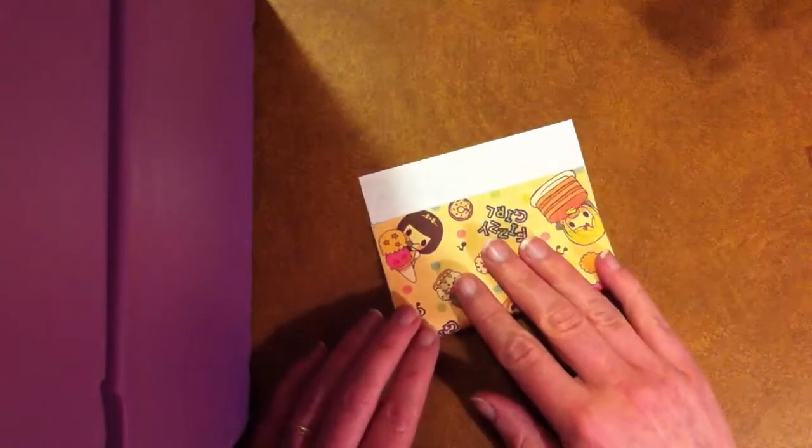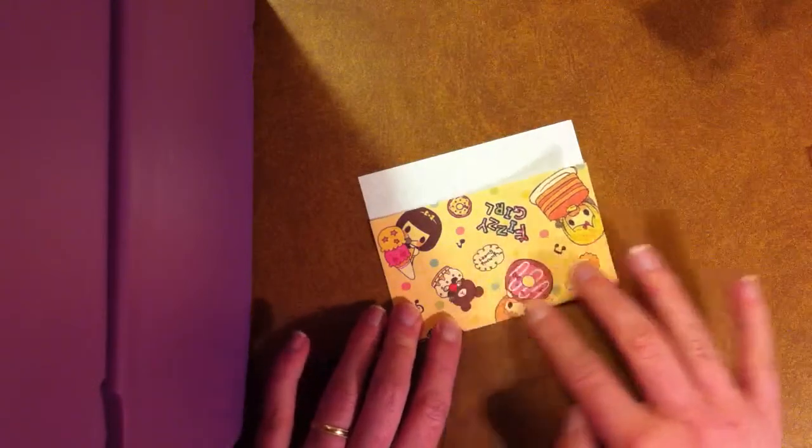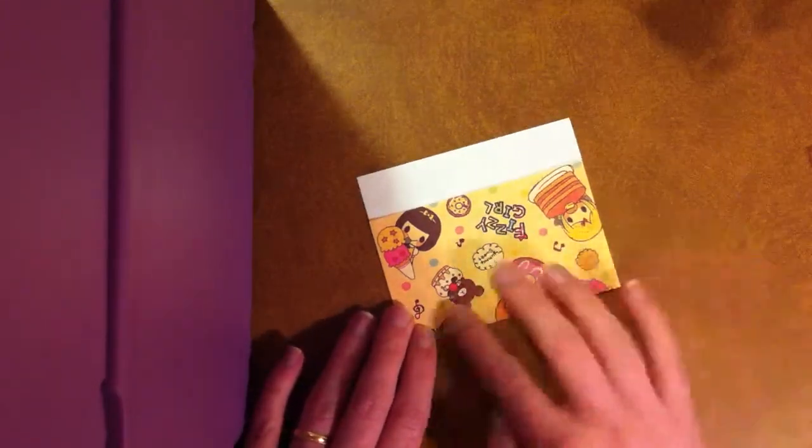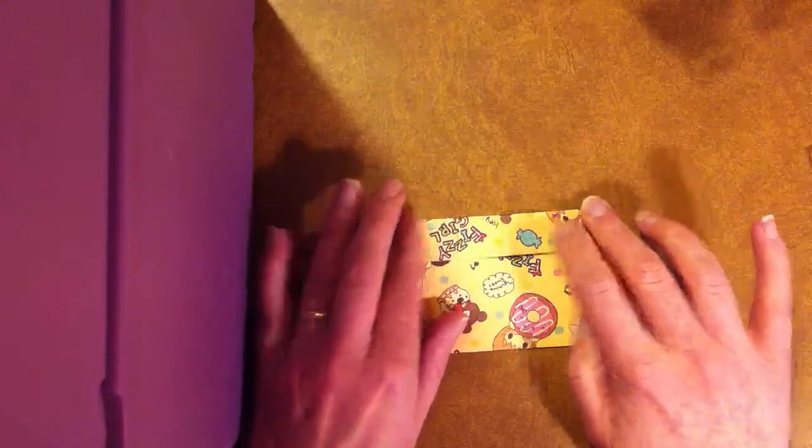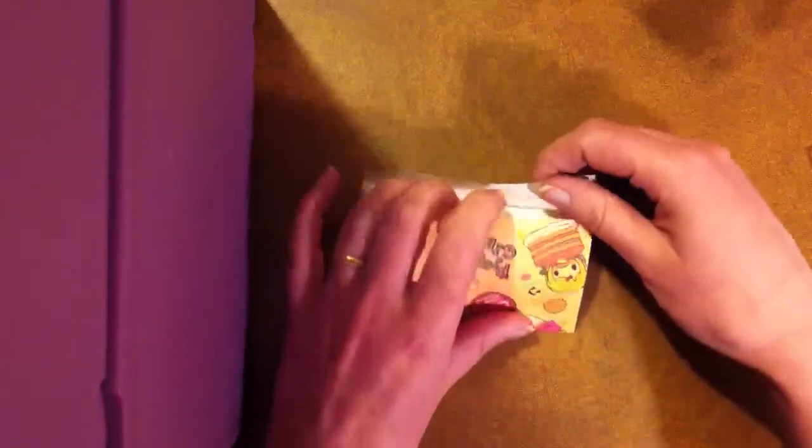If you take it and fold it like so, get a nice crisp clean fold there, and then this is going to eventually be the over flap. Okay, you've got your first three folds there.